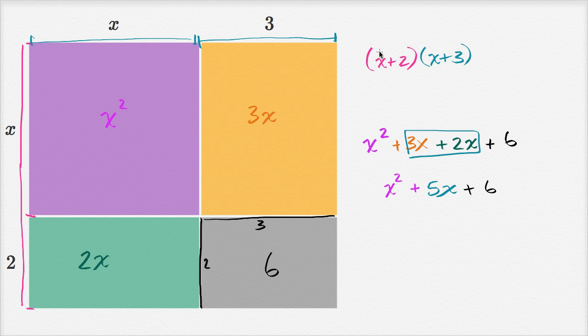We could do that really fast. You multiply the x times the x. Actually, let me do that in the same colors. You multiply the x times the x, you get the x squared. You multiply this x times the three, you get your three x. You multiply the two times the x, you get your two x. And then you multiply the two times the three, and you get your six.